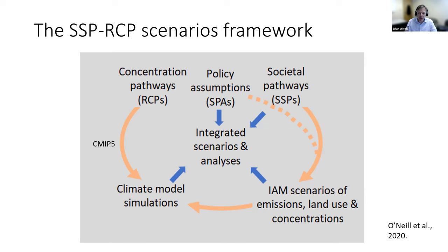The SSPs themselves were used to develop new scenarios of emissions, land use, and concentrations in integrated assessment models. Those emissions and concentration pathways have already been used in the next round of climate modeling, CMIP-6, to produce climate model simulations. At the moment, you can combine societal futures with either the CMIP-5 or the CMIP-6 climate model simulations — both are now available.